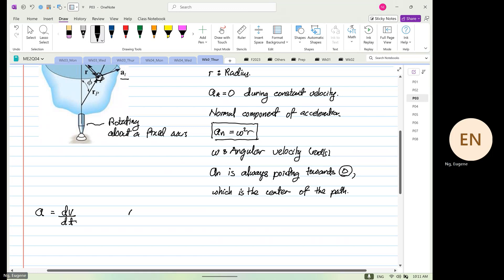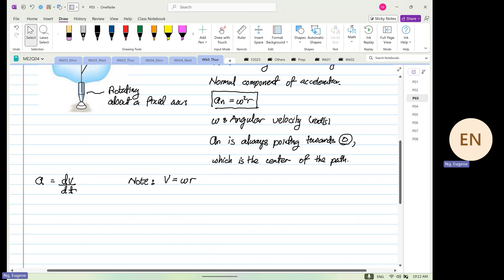So we are aware that acceleration is equal to dv by dt. We know that. And note for this case, it's rotation about a fixed axis where you have v is equal to omega r. So from here, we can write up this expression. We have d omega r divided by dt.